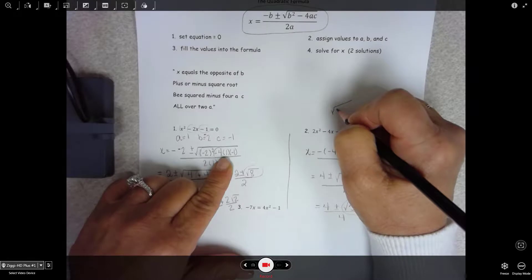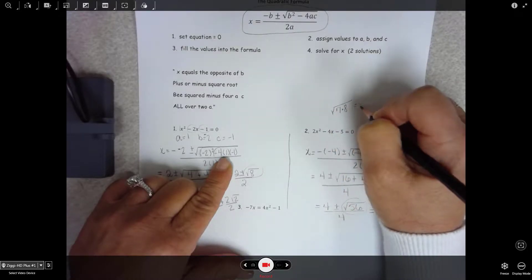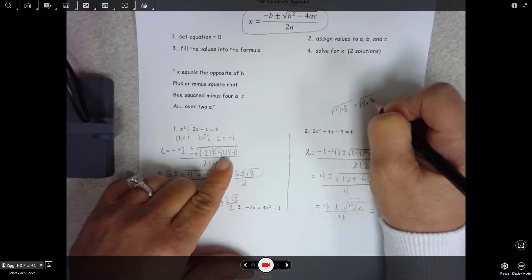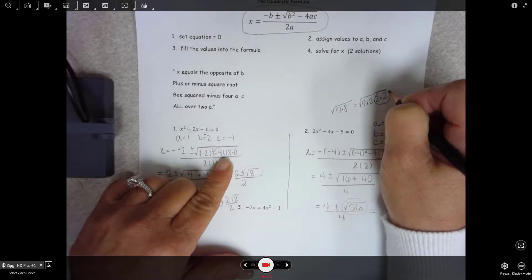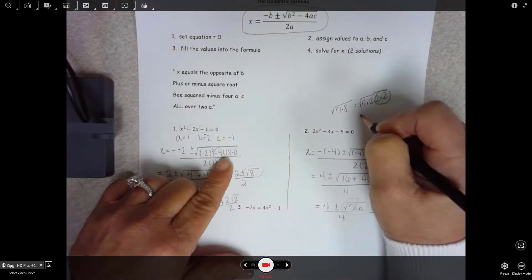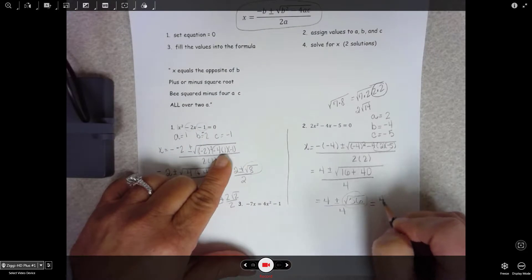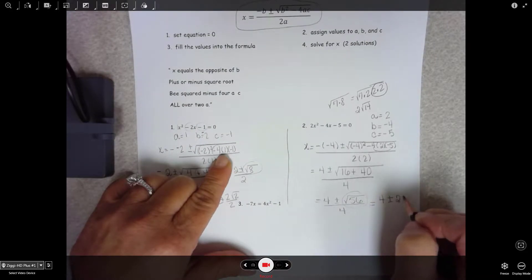56 is the same thing as 7 times 8, so 7 times 2 times 2 times 2. That one pair, so it'll pop out 2 square root of 14. So we have 4 plus or minus 2 square root of 14 all over 4.